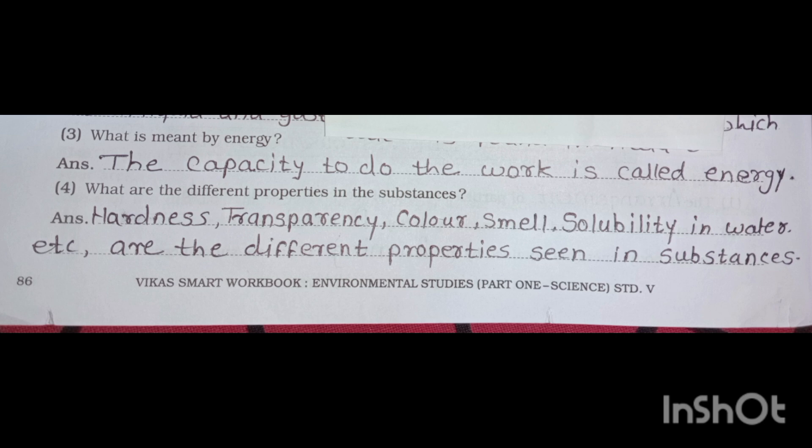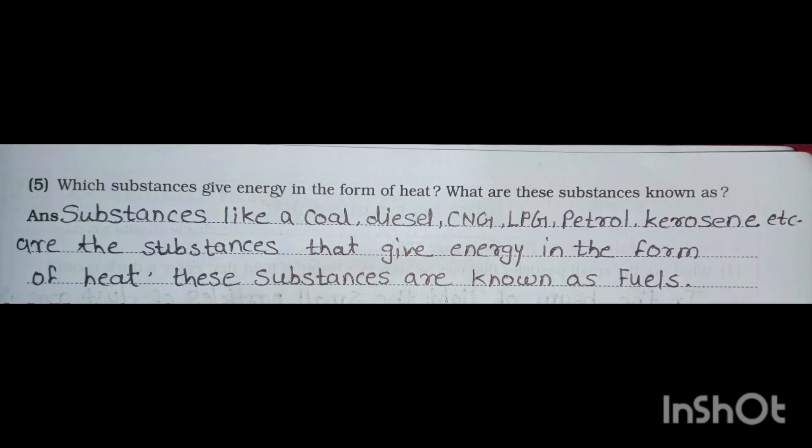Question No. 5: Which substances give energy in the form of heat? What are these substances known as? Answer: substances like coal, diesel, CNG, LPG, petrol, kerosene, etc. are the substances that give energy in the form of heat. These substances are known as fuel.